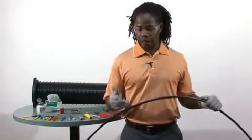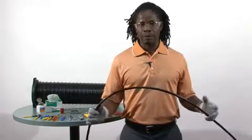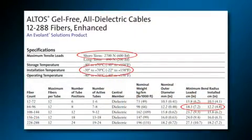For this particular cable, 96 fiber Altos, observe a minimum bend radius of 7.2 inches and a maximum pulling tension of 600 pounds and you will be okay.